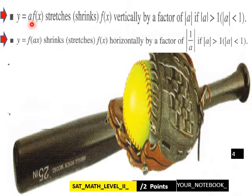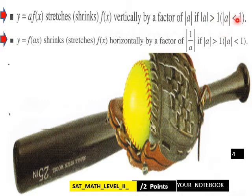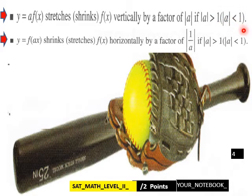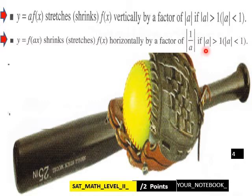y = a·f(x) stretches or shrinks f(x) vertically by a factor of |a|: it stretches if |a| > 1 and shrinks if |a| < 1. And y = f(ax) shrinks or stretches f(x) horizontally by a factor of 1/a: it shrinks if |a| > 1 and stretches if |a| < 1.